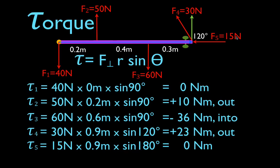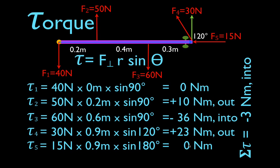We went over all five forces, calculated the individual torques, and now we add them all up: zero plus ten plus negative 36 plus 23 plus zero gives us the net torque. The sum of all those torques is negative three newton meters. It has a magnitude of three newton meters. The negative sign means that all of these forces combined would cause this object to rotate in the clockwise direction, and therefore the direction of the torque vector would be into your computer screen.